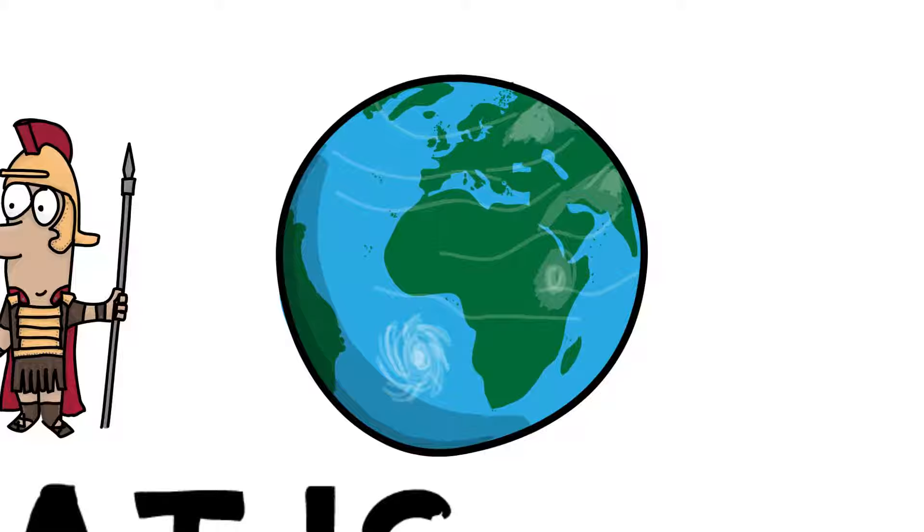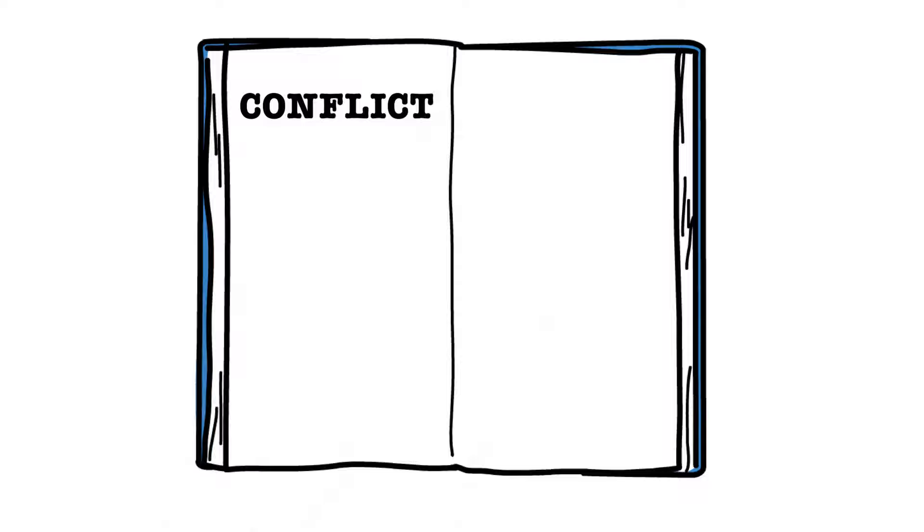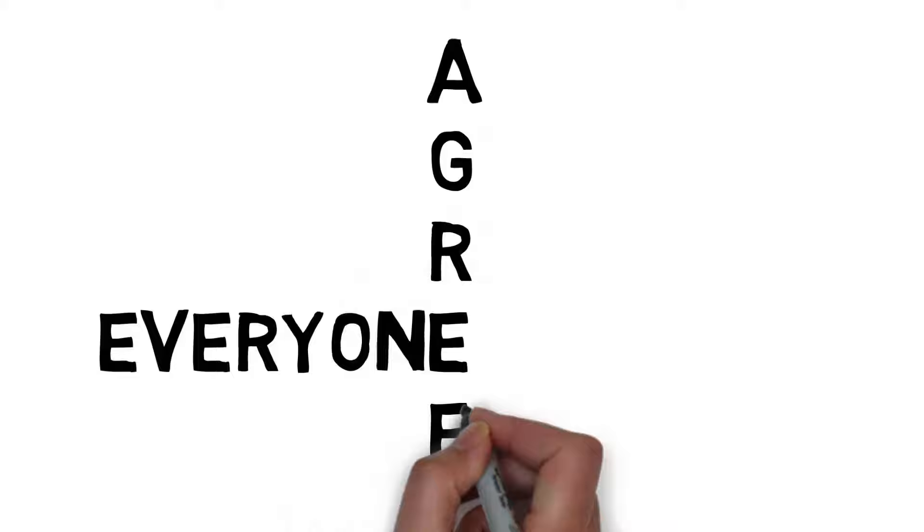What would that world look like? Simply stated, conflict is a struggle between opposing forces, so that means everyone would have to agree with everyone else on everything.